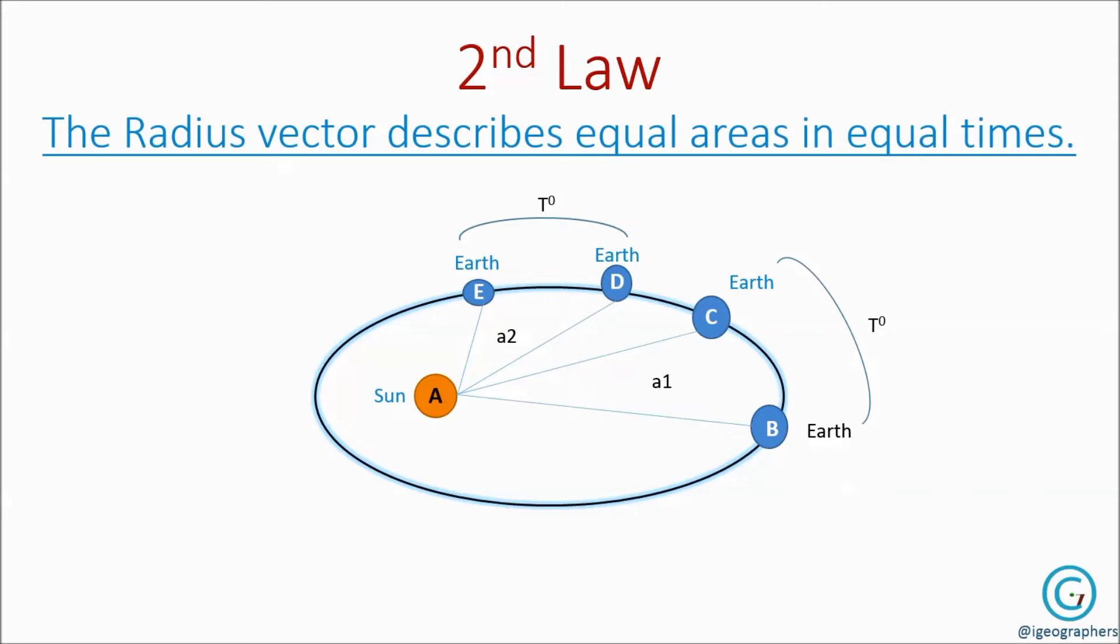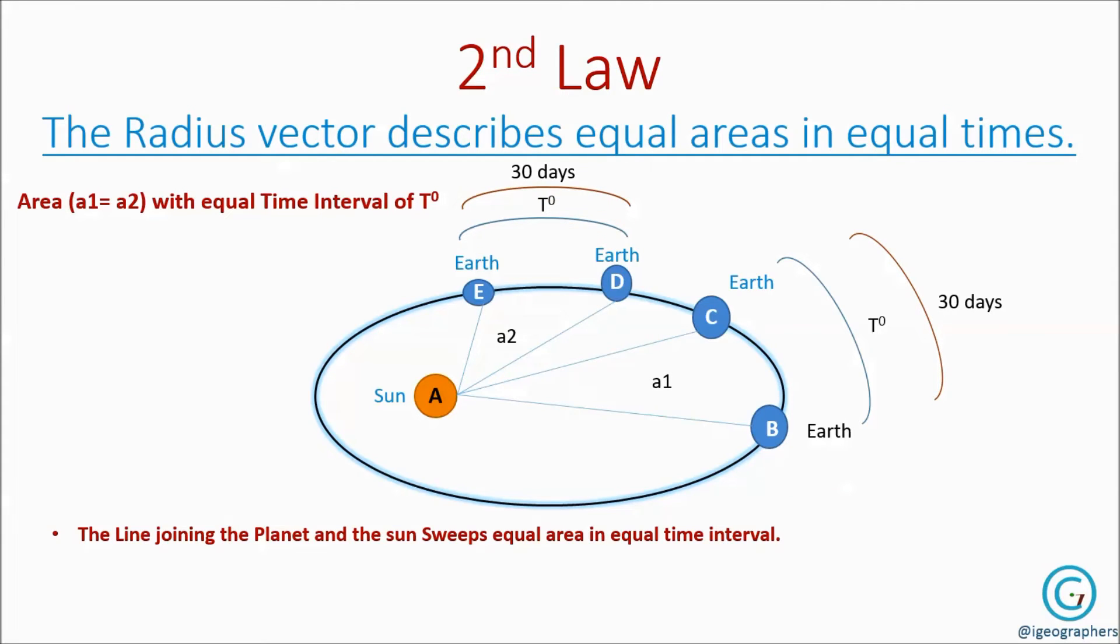Because the line joining the planet and the sun sweeps equal area in equal time interval. In simple words, if Earth takes 30 days to reach from point B to C and if the same Earth takes 30 days to reach from point D to E, then the area swept by Earth from point B to C and from point D to E is equal. That is, area A1 is equal to area A2.